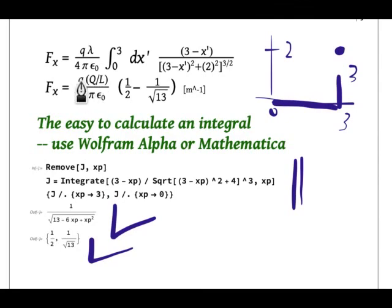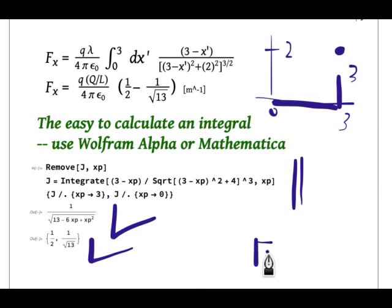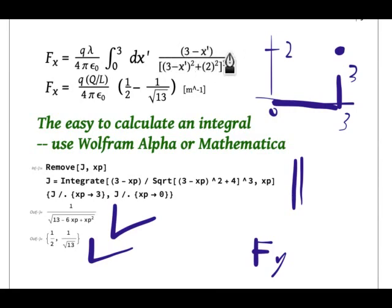For a homework problem you'd be given values for Q and q, and you know ε₀, so you plug in the numbers using a calculator. Remember to use standard units so the final unit will be newtons. That's Fx. You still have to do Fy — I'll leave that as an exercise. For Fy, in the numerator you'd have y − y′ = 2 (since y = 2 and y′ = 0), giving the integral of 2 dx′ over [(3 − x′)² + 4]^(3/2), which Wolfram Alpha can handle immediately.